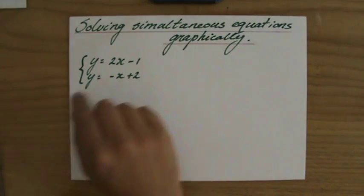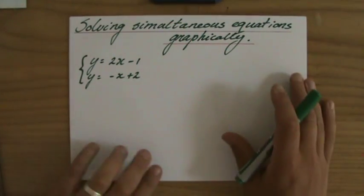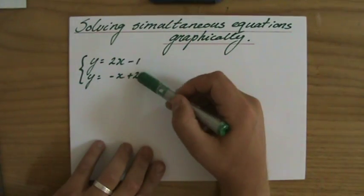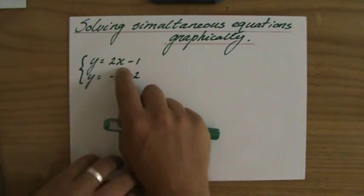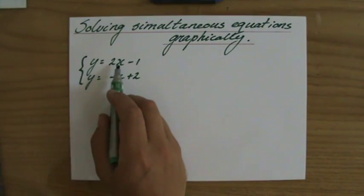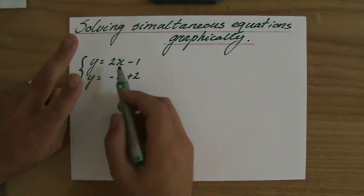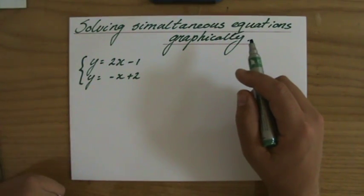What does that mean, simultaneous? That means at the same time. And why do I have to solve two equations at the same time? Because how many unknowns, how many variables do I have? I have a Y, I have an X, so I have two variables. That means I'll need two equations to solve it.